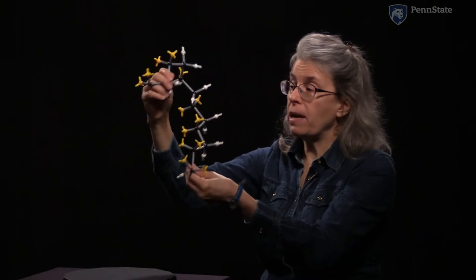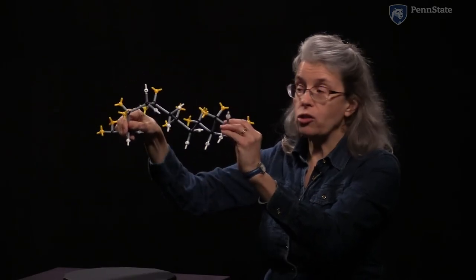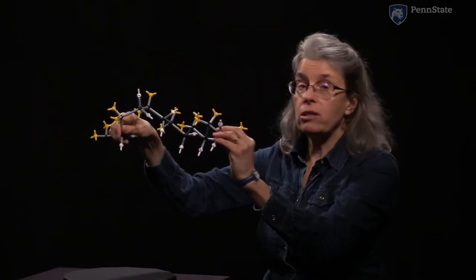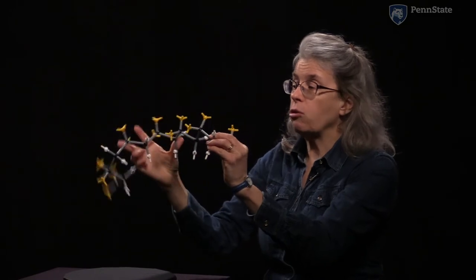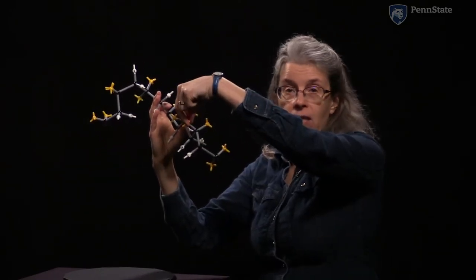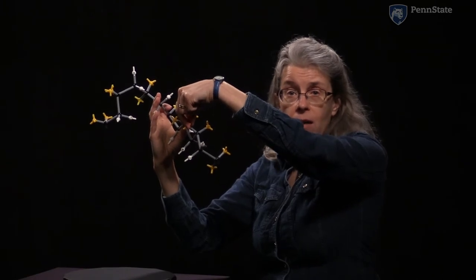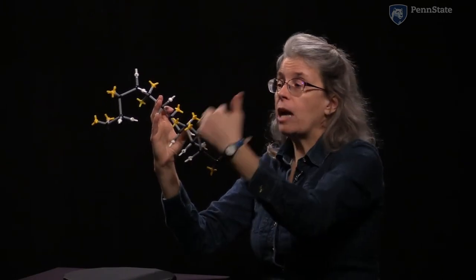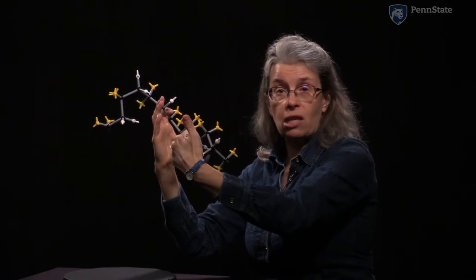It will also be apparent that the way in which this coils is going to depend on how large the side groups are. So if instead of having something relatively modest in size like a fluorine, I were to put a large benzene ring here...